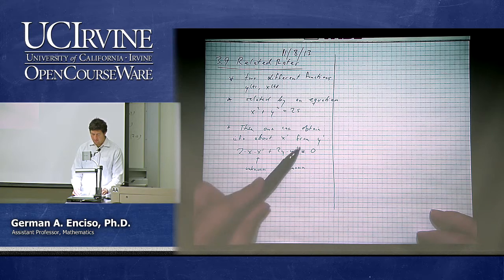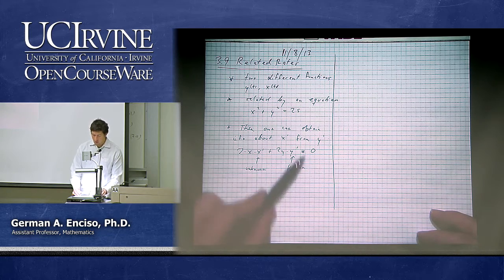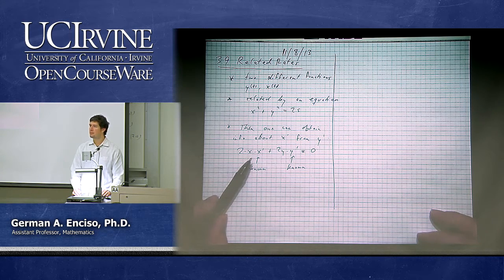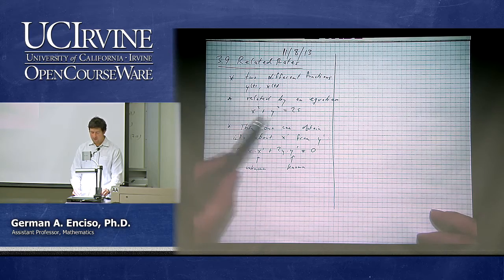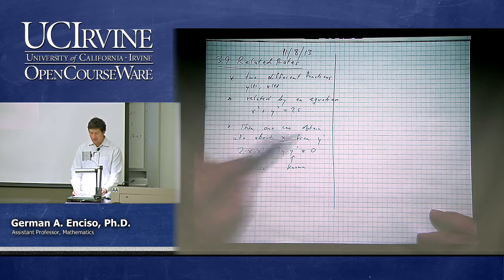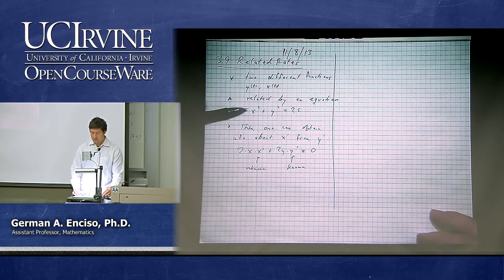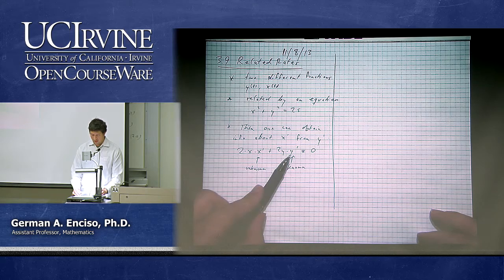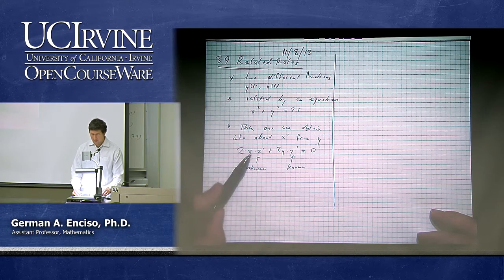The idea is that if you have an equation relating x prime and y prime, and you know y prime, you should be able to figure out x prime. We have two functions of time, x(t) and y(t), related by an equation. So what I do is differentiate on both sides with respect to time, and if I know y prime, I can figure out x prime.